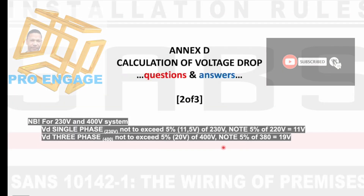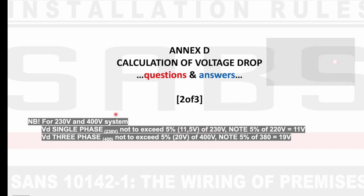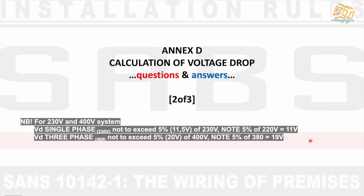We have the same information as before, which will come in handy as we carry on. We're working with two AC systems: 230 volts single phase and 400 volts three phase. The maximum allowable voltage drop must not exceed 5% for either single phase or three phase. Single phase can be 220 V or 230 V, and three phase can be 400 V or 380 V. If the voltage is not given, we use 400 V for three phase and 230 V for single phase. Bear in mind that the percentages will differ slightly.